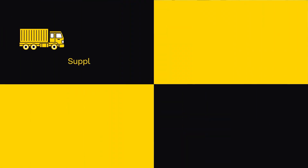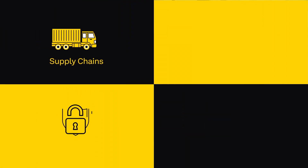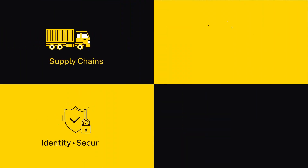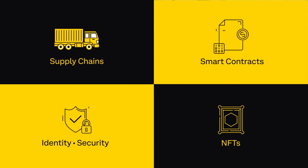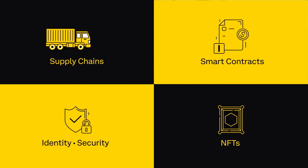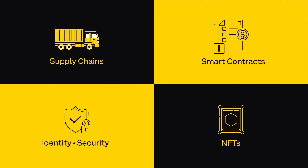Blockchain however can do other things besides cryptocurrency, or aside from finance, even aside from money. You can use blockchain to deal with supply chain management, identity, security, smart contracts, NFTs — all these things that Sid really likes to talk about. So we'll get to that in a bit.